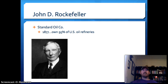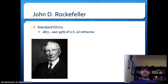The third major player is John D. Rockefeller, who was involved with the oil industry. He was a ruthless businessman who wasn't afraid to put other people out of business to maintain his hold on the oil industry. By 1877, he owned 95% of US oil refineries.